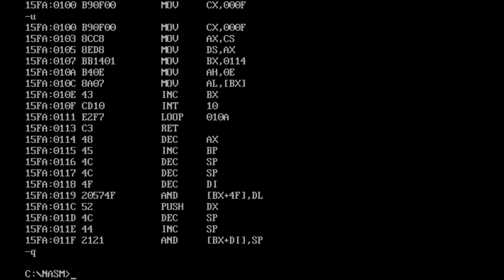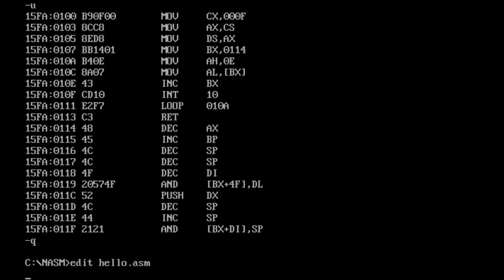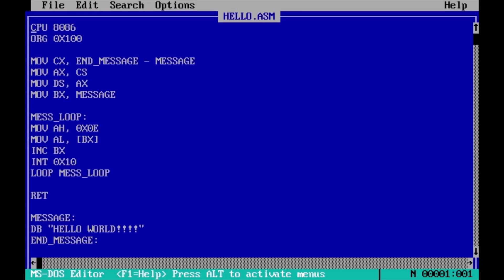So I'm going to quit this and then we will just hit edit real quick. Hello dot ASM. And you can see, this is how it's written for our assembler, which makes a lot more sense. So you got that zero nine by doing the math on end of message minus message. There's our straightforward AX, CX, BX to the message location. Then we run our loop.